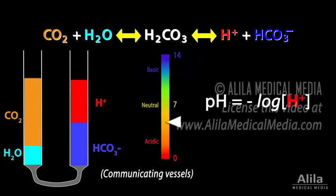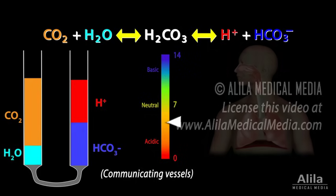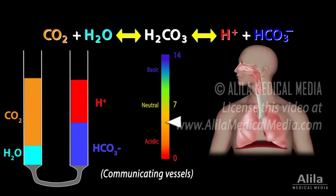Normal metabolism, therefore, constantly makes the blood more acidic. The body must react to keep the blood pH within normal limits. This is achieved by two mechanisms.